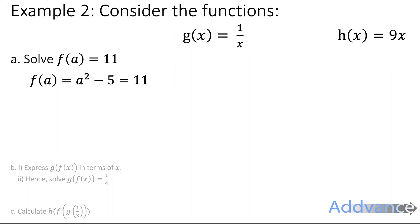We're going to add 5 to both sides, and we get a squared equals 16. Now we have to do the opposite square. We square root both sides, and we get a equals plus or minus 4.